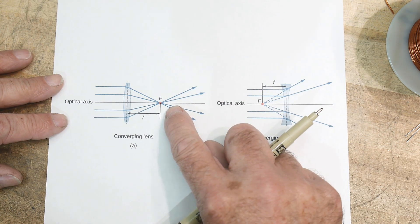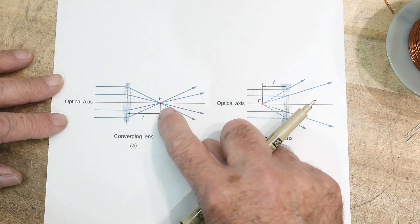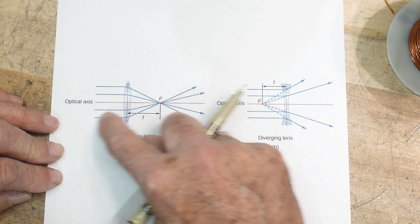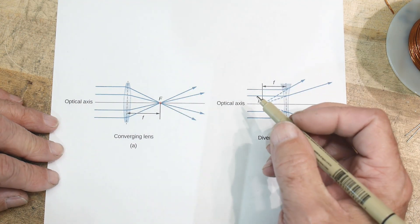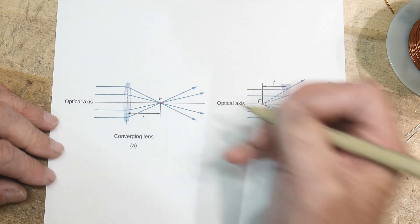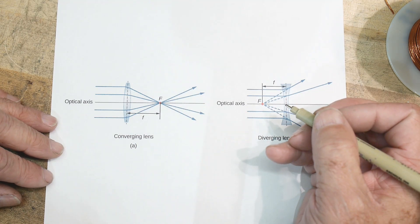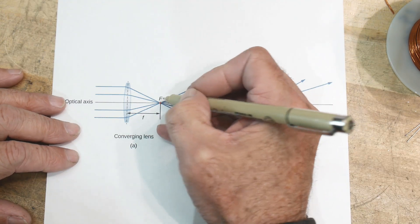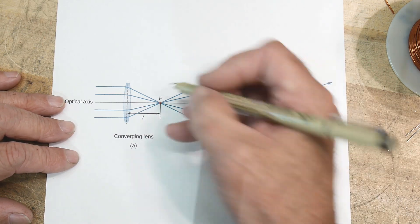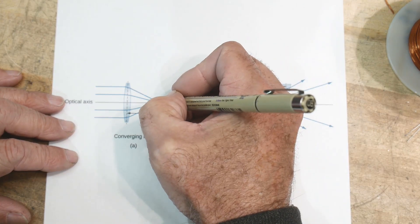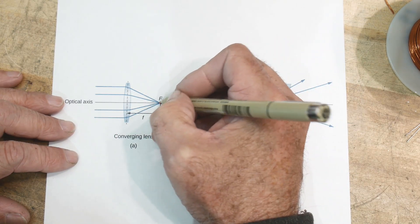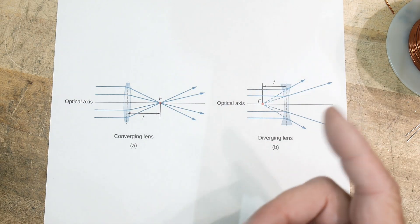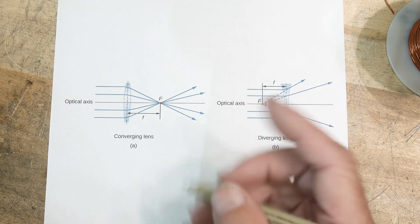Well, they only show you an ideal case. You have parallel light coming in and it focuses to a point. It doesn't actually focus to a point — that's the short answer.